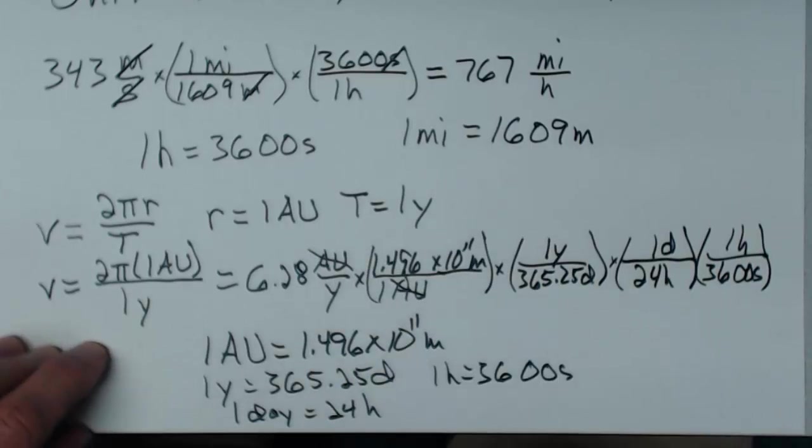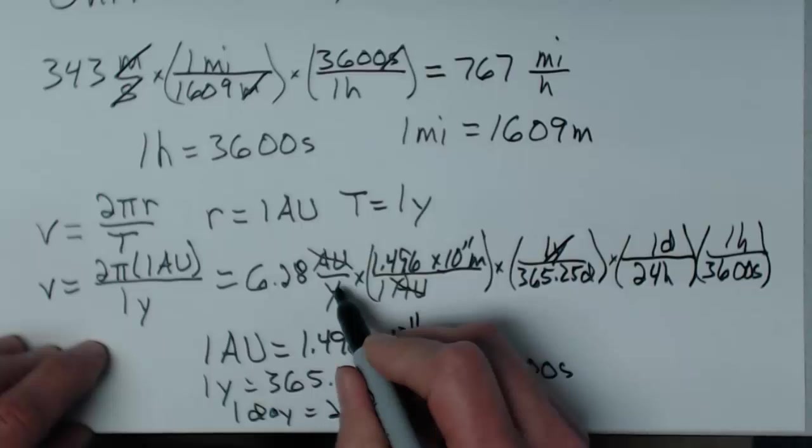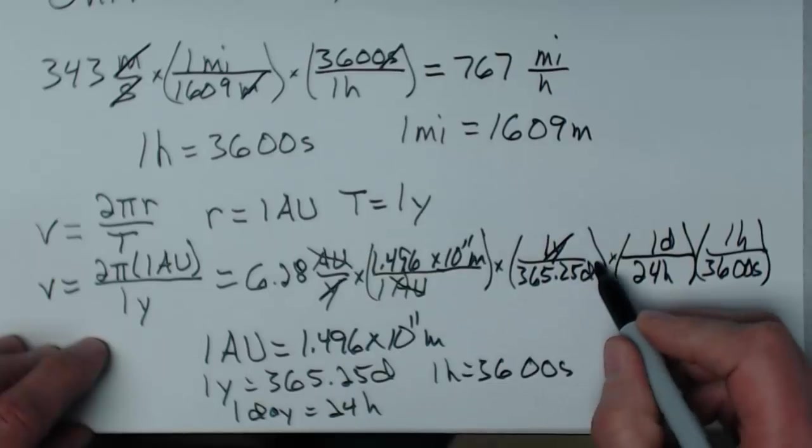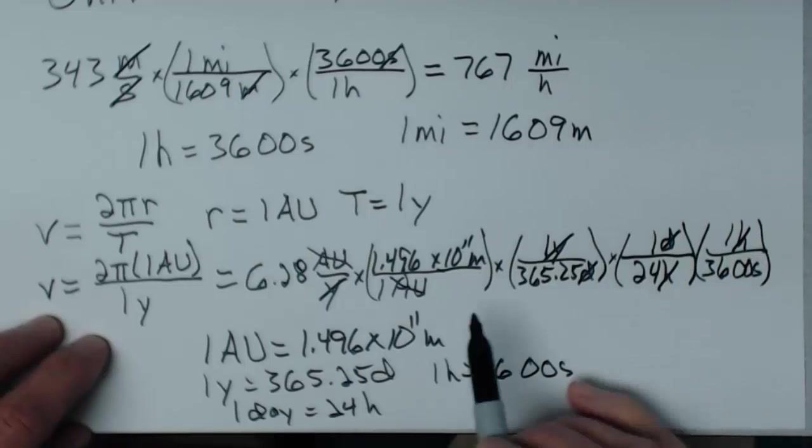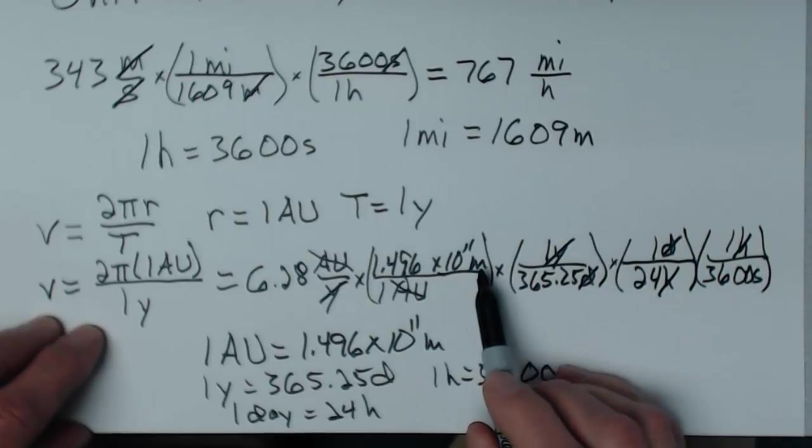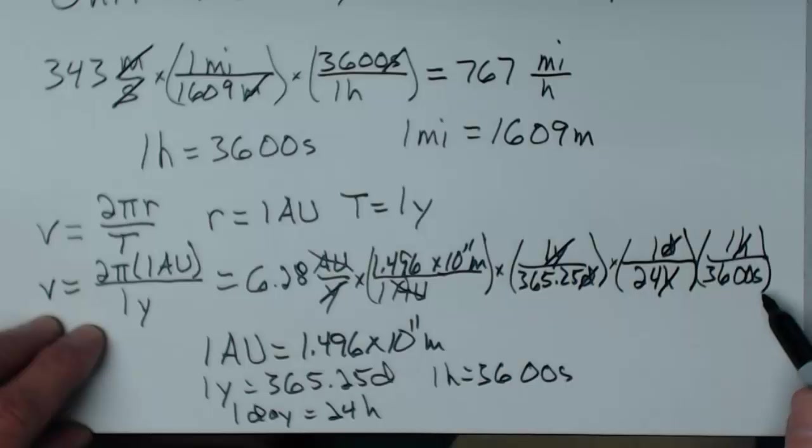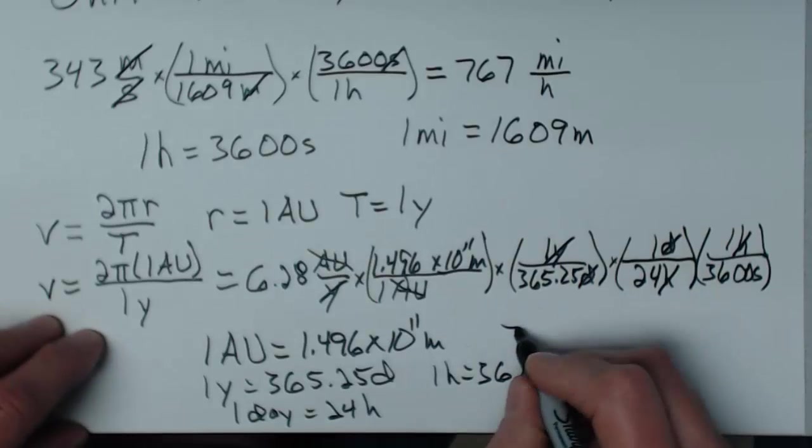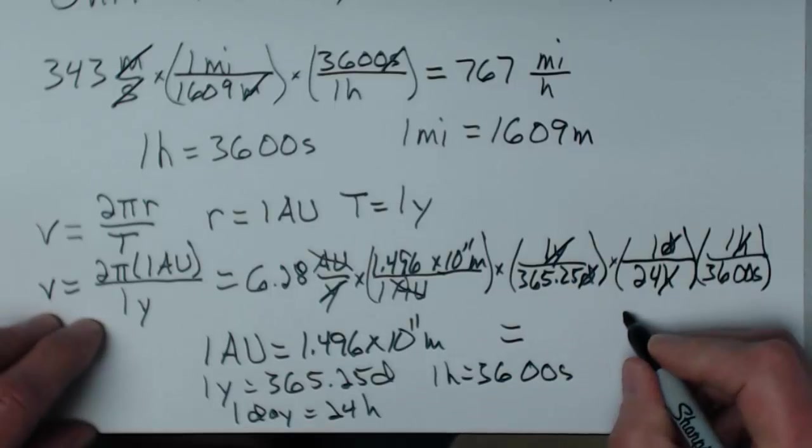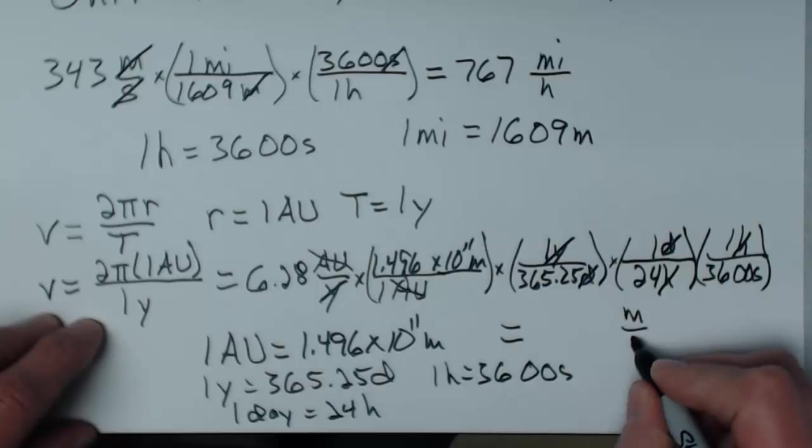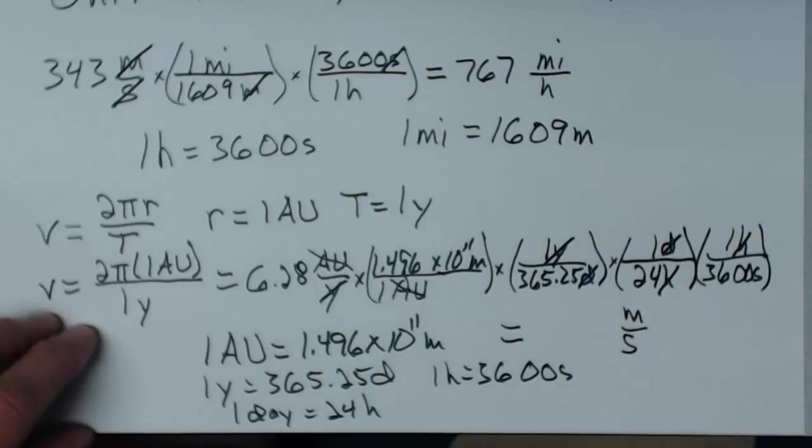AU divides out. Years divide out. Days divide out. Hours divide out. The only things left unit-wise are meters on top and seconds on the bottom. So if I multiply all those things out, I'll have meters per second for a speed, and let's find out what it is.